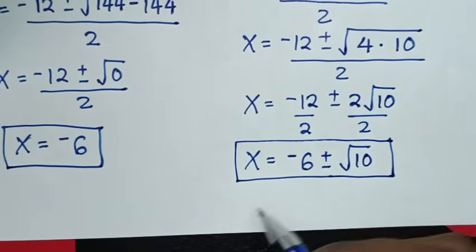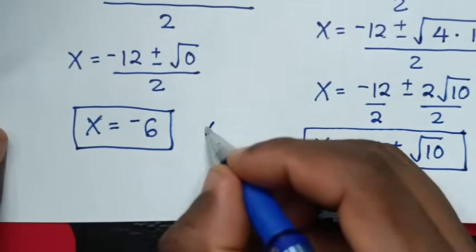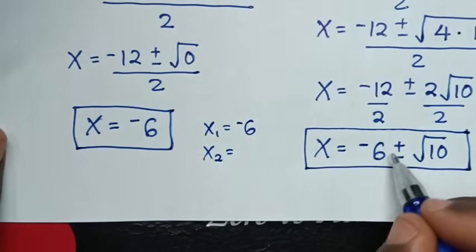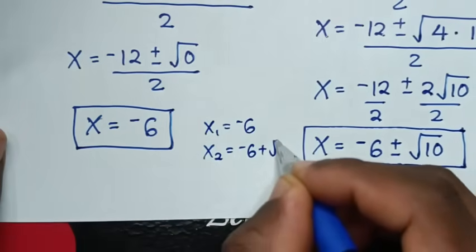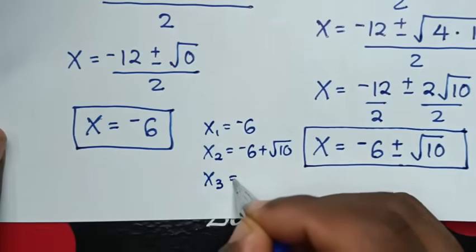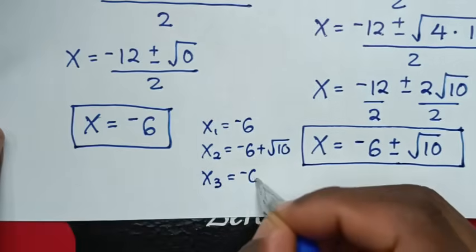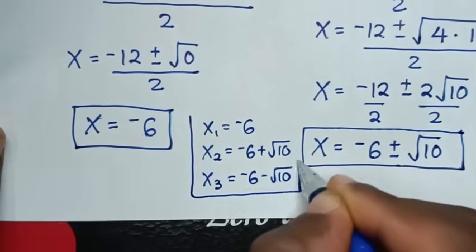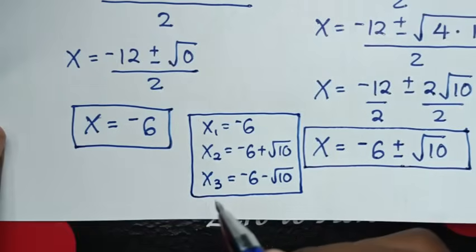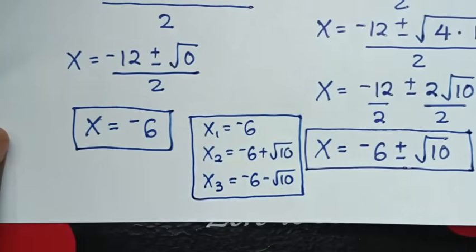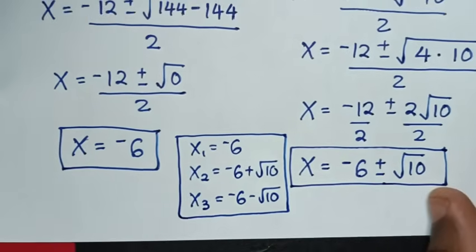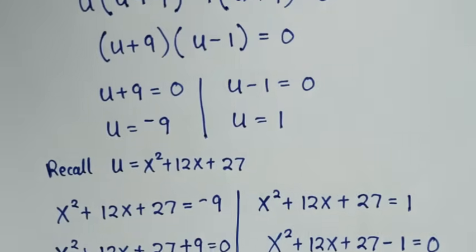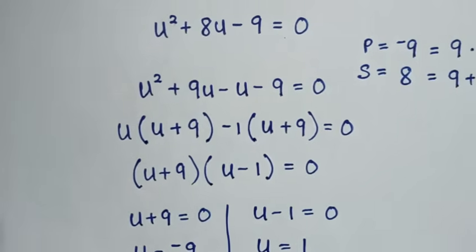Therefore the three values of x are: x = −6, x = −6+√10, and x = −6−√10. These are the same answers as in the first method. Thank you, please subscribe to my channel and see you in the next video.